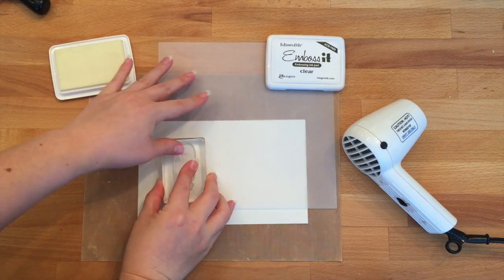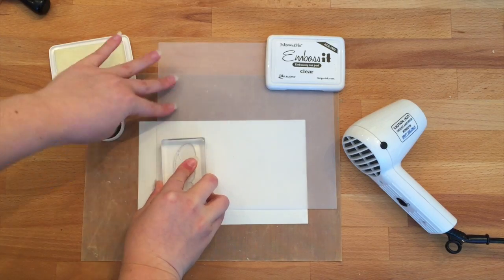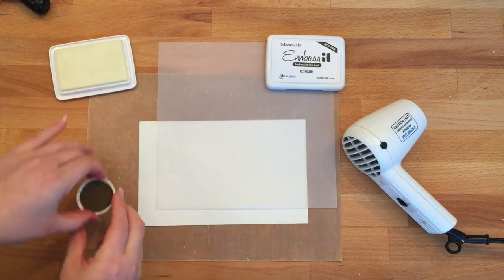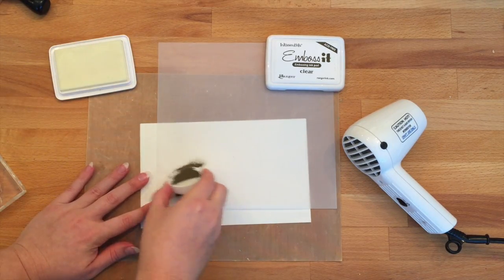We're going to use the smallest feather stamp from that set and stamp it onto some vellum with the Ranger Emboss It clear embossing ink.